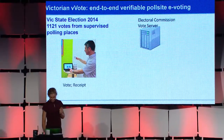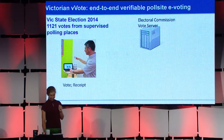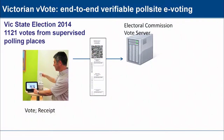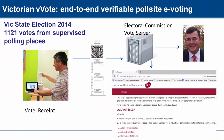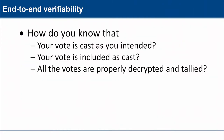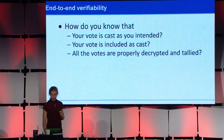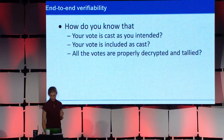Here's a schematic diagram of how it all works. Steve casts his vote, which gets uploaded to the electoral commission's server and also printed out for him to take home. It's posted, the election outcome is announced, and then all of these proofs about why the election outcome is right are posted on the web. The obvious questions are: how do you know that your vote is cast as you intended? How do you know that your vote is properly included into the tally in the way that you cast it? And how do you know that all the votes are properly decrypted and tallied?